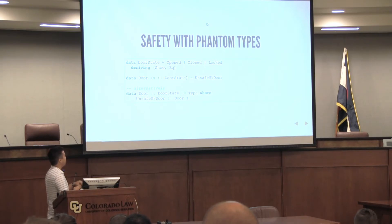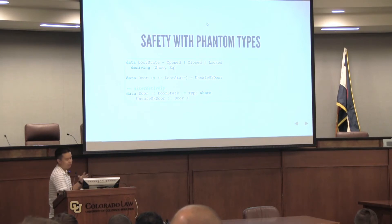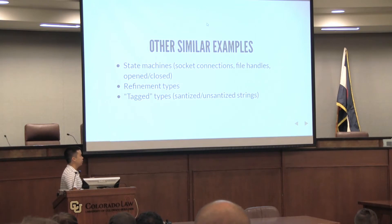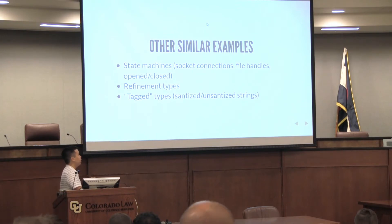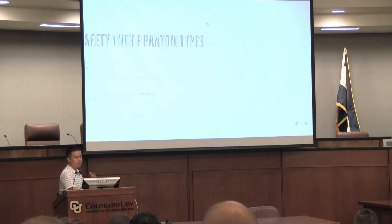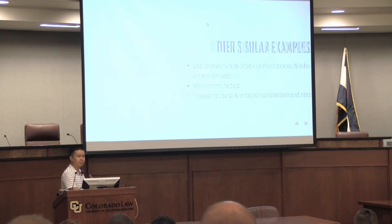So unsafely, we'll define a very primitive door type using unsafe make door. If you use make door, you can make any type you want, but we want to restrict that — so it's unsafe to make a door of any state you want. Other examples in real life include state machines: socket connections, file handles, open or closed. Refinement types — things like less-than-or-equal-to certain restricted ranges of integers or all-capitalized strings. And we might have tag types — strings that are sanitized or unsanitized. So this is a very simplified example, but in the real world we get very similar things.